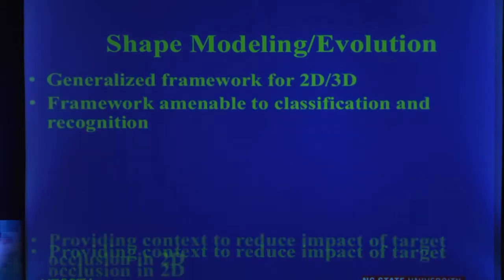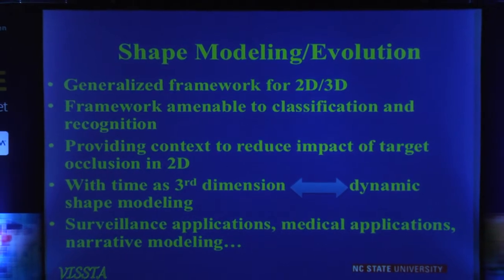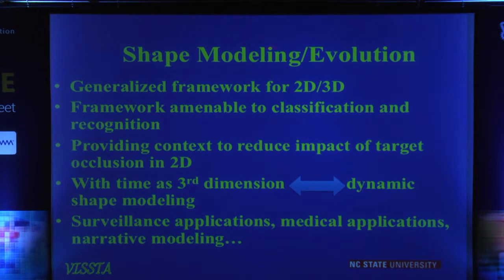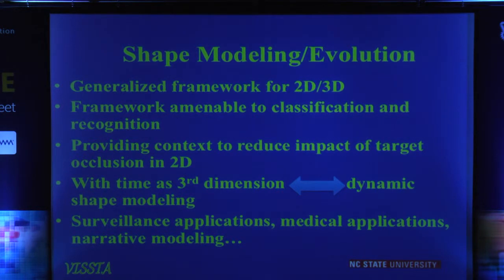So what are we talking about? Why are we even looking at 3D shapes, which typically evolved from 2D shapes? Well, first of all, we were very interested in classification of objects — how do we come up with a model that's amenable to statistical classification of targets? And then, of course, it's a natural framework for reducing the impact of occlusion in 2D shape analysis.